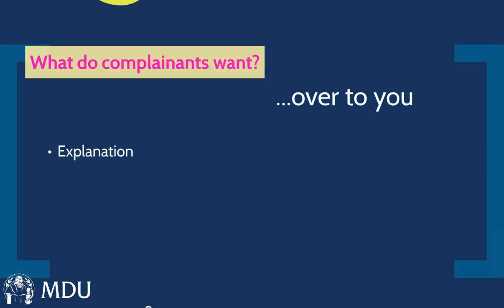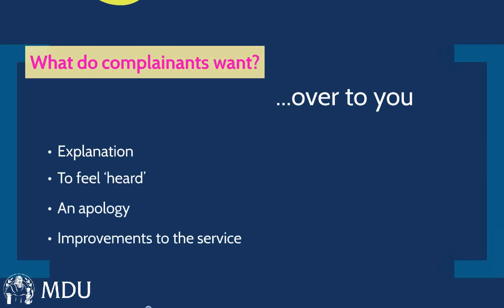Whatever else a complainant may be seeking, an explanation is really at the core. You've got to think about that not only in terms of how you answer the complaint but how you investigate it in order to provide that explanation. There is an issue that people want their complaint to feel heard, and an apology is certainly important. Often there are requests that they don't want it to happen to somebody else. Complainants also want to know that the practice or the person complained about has taken ownership and is dealing with the complaint and the issues within it.